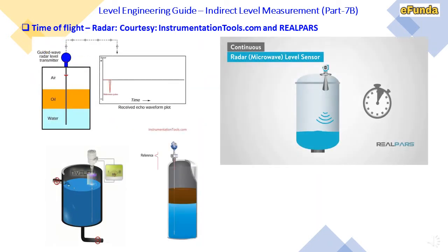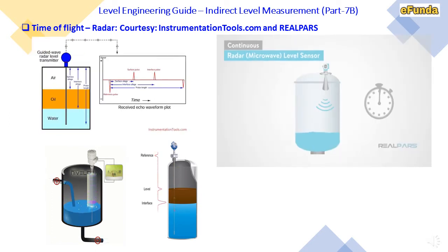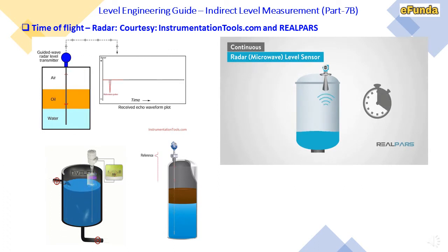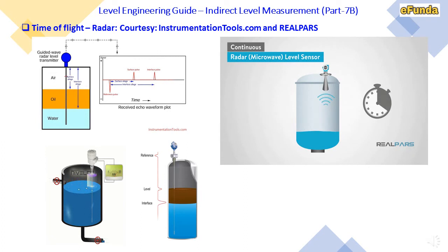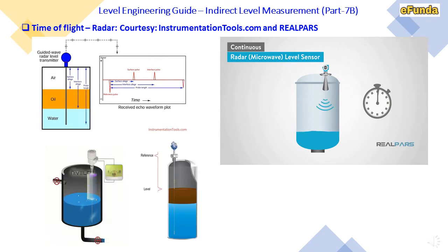Animations are used for better understanding of the time of flight radar principle. In the animation, one can see a guided wave radar type level transmitter as well as a non-contact radar type, showing changes in level from 0 to 100 percent measured in terms of 4 to 20 milliamps. The waveform for the non-contact type is also shown.